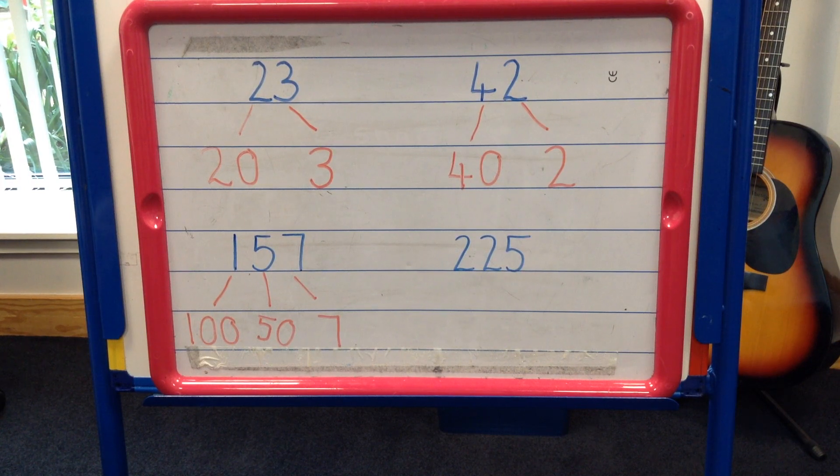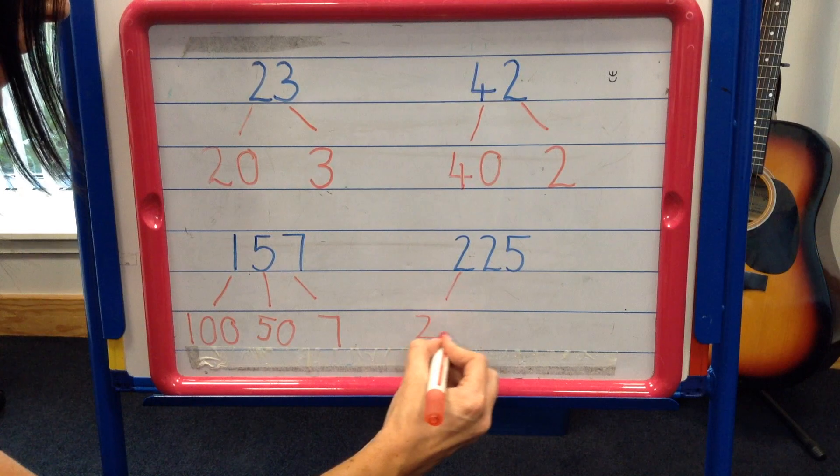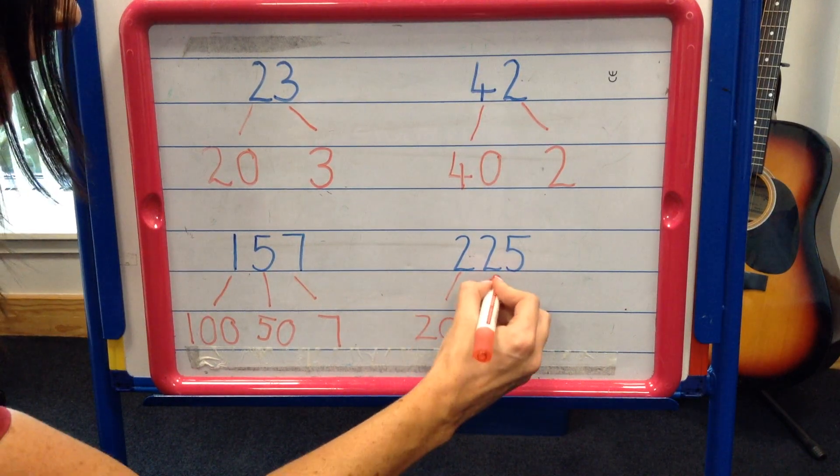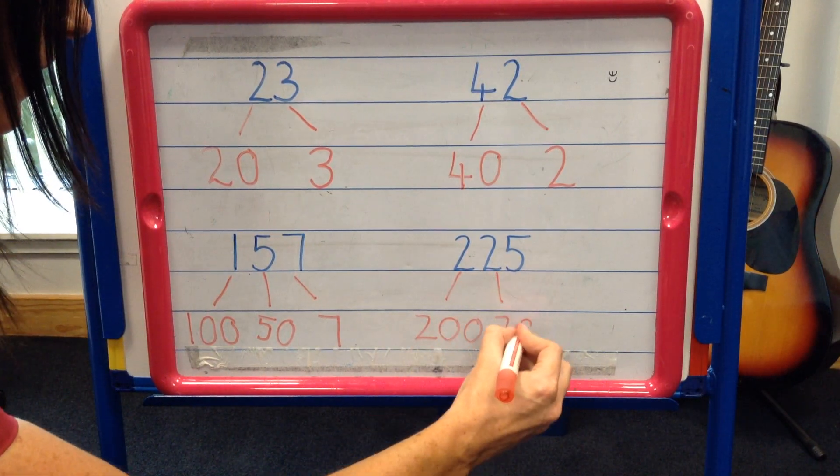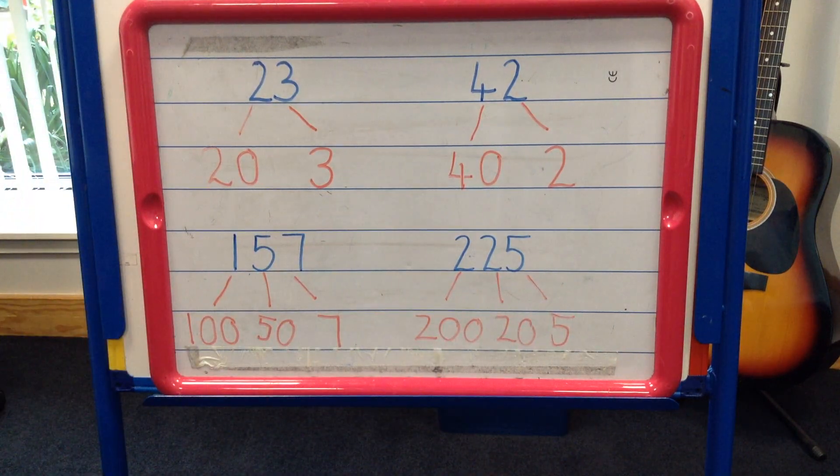Why don't you have a go? Can you partition 225? 2 hundreds, 2 tens and 5 ones. Did you get it correct?